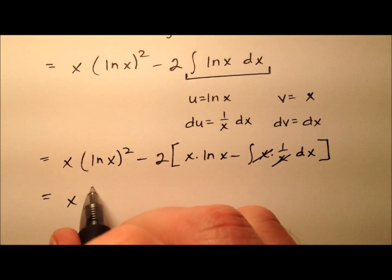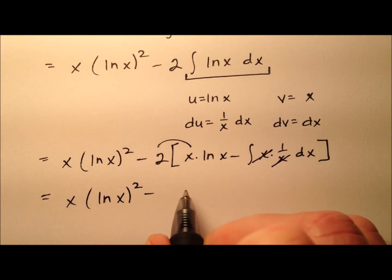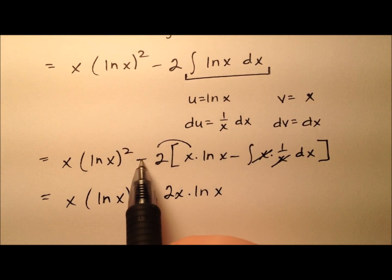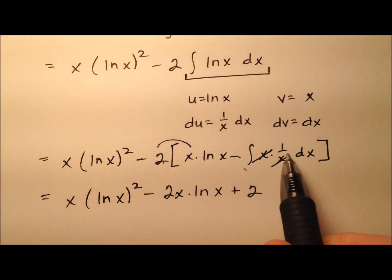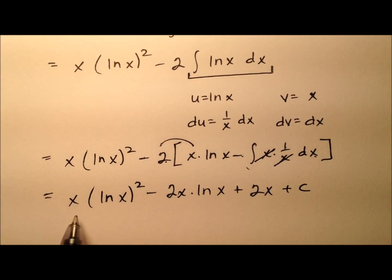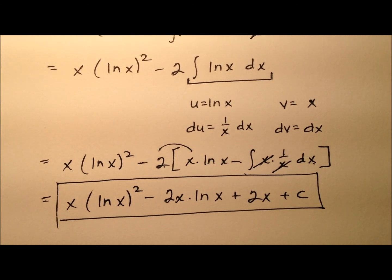So we're almost there. It's just a matter of simplifying some things. I'm going to run that 2 through. So minus 2x times the ln of x. And then the negative 2 and this minus will be positive 2. And then the integral of just 1 with respect to x is just x. And then we'll put a plus c on the end. So there are no like terms here. So the integral then for the square of the natural log of x is going to be this expression.